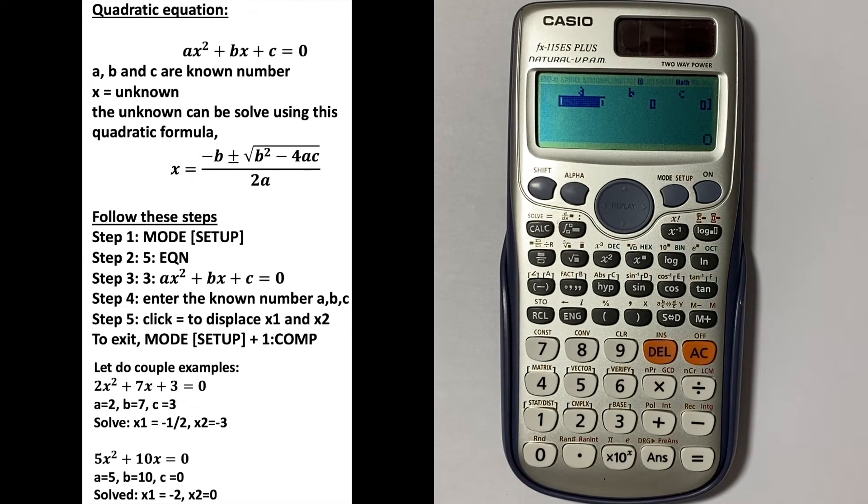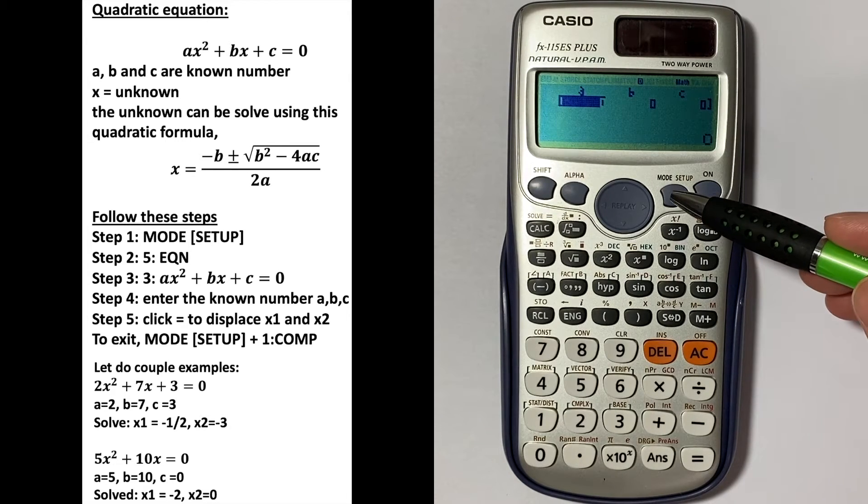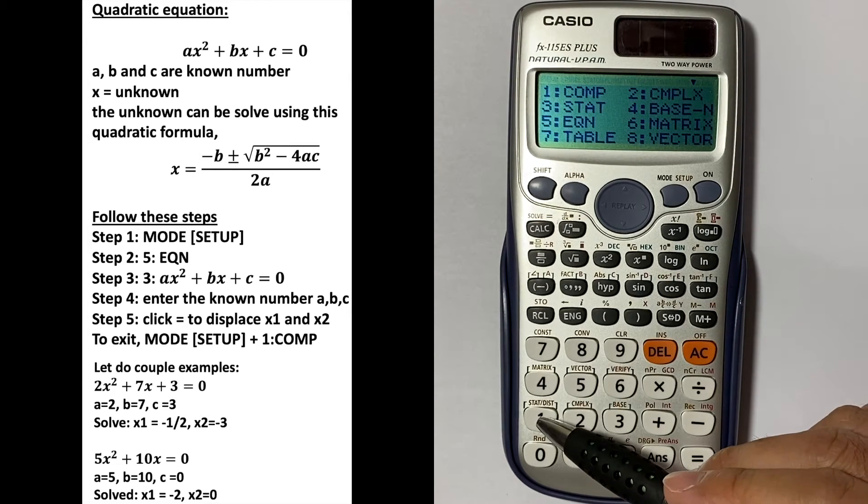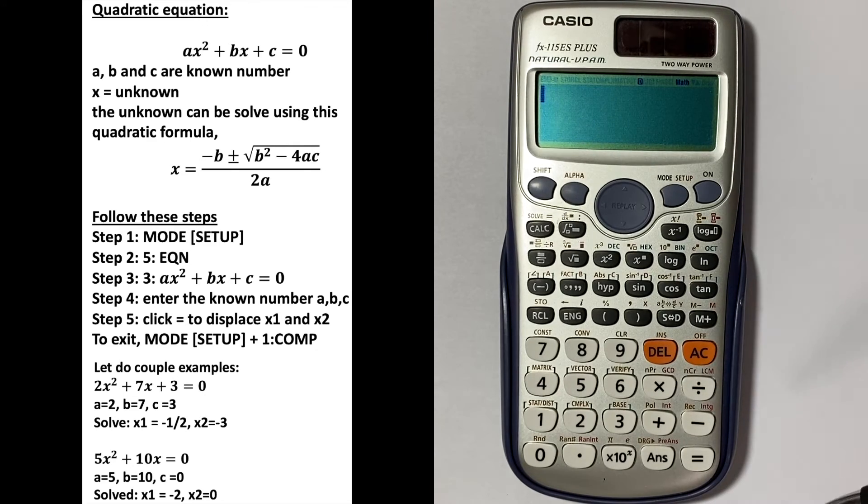To access the quadratic function, just click mode and then one for computation, and you come up to the original screen. Let's do a couple examples here. Let's say you have 2x squared plus 7x plus 3 equal to 0.